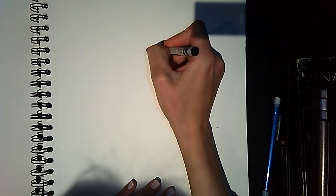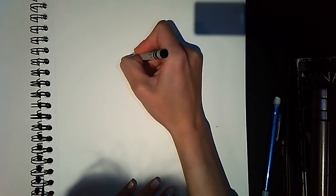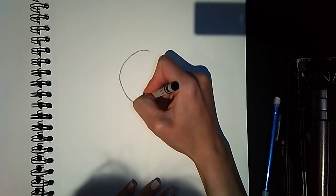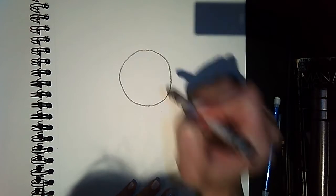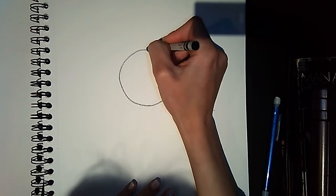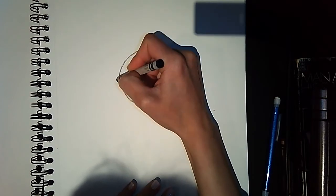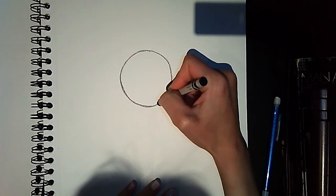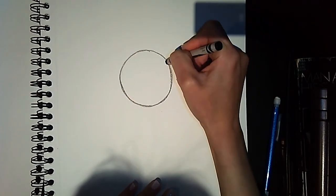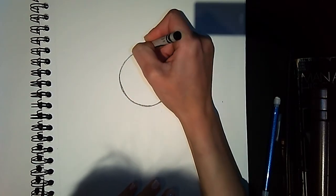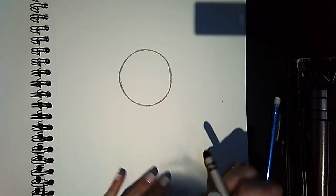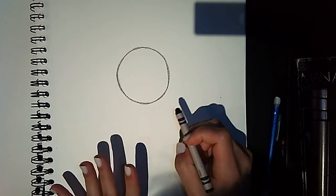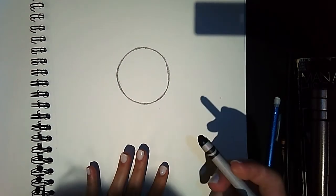We're going to start off by making the center of the sunflower nice and round. Again, because we're thinking of organic lines and shapes, it does not have to be perfect.